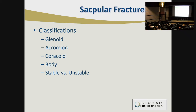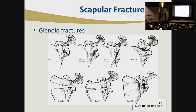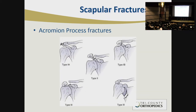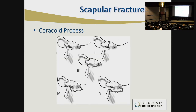Classifications for scapula fractures are very difficult — historically, because it's a rarer fracture, there's no great system to hang your hat on. Essentially, classifications involve whether it's a glenoid fracture, acromion fracture, coracoid fracture, or body fracture, and whether injuries are stable or unstable. Glenoid fractures are classified by whether the fracture is inferior, superior, involves the body, or is comminuted. Acromion process fractures range from deltoid avulsions to articular surface involvement. Coracoid process fractures range from avulsion to glenoid involvement, showing increasing instability of the osteoligamentous superior shoulder complex.